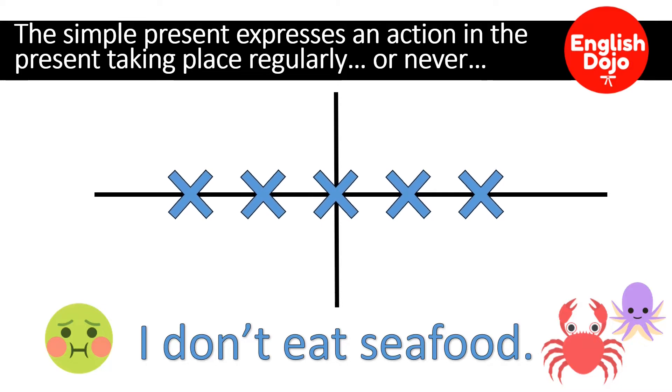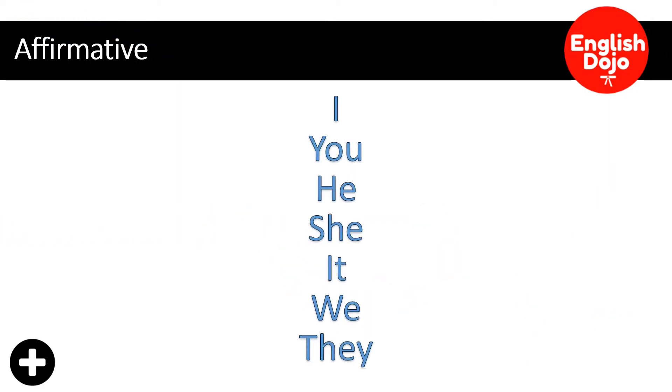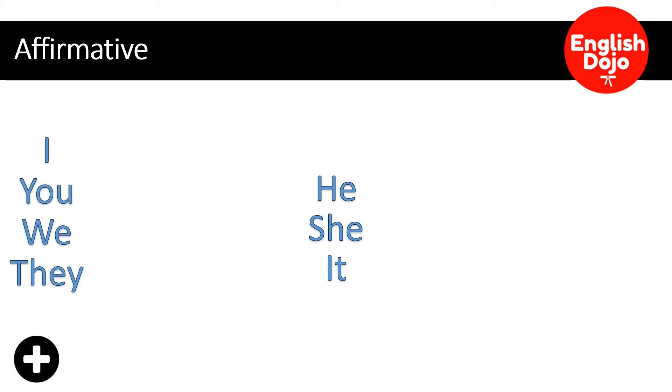Pero vamos a la conjugación. Let's have a look at the affirmative conjugation. Vamos a ver la conjugación en afirmativo. Obviamente necesitamos pronombres personales. I, you, he, she, it, we, and they. Y en este tema los vamos a dividir en dos. Por un lado vamos a tener I, you, we, they. Y por el otro a he, she, it.